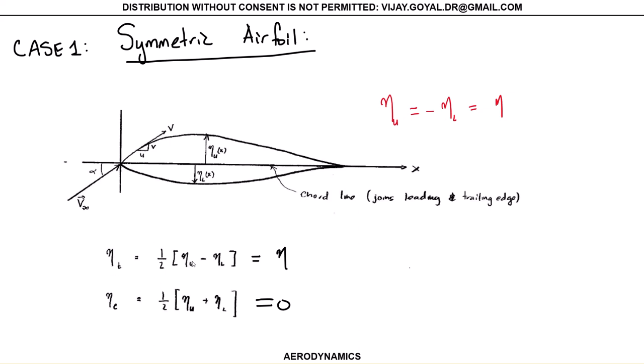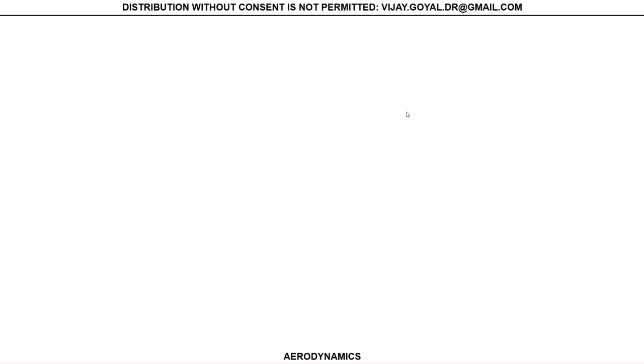When you take the average of this, it will actually give you eta, and if you add them up it gives zero because it's completely symmetric.